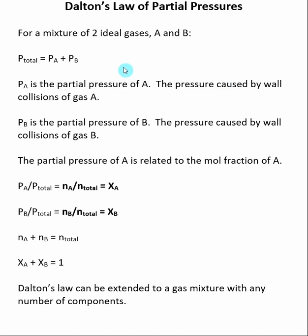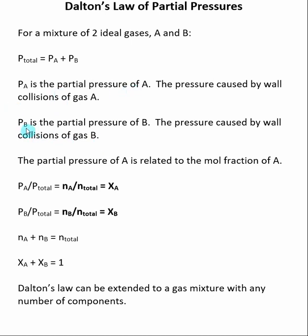Thus far, we've only been looking at examples that have involved one gas. Dalton's Law of Partial Pressures allows us to look at situations that involve more than one gas. Dalton's Law of Partial Pressures says that for a mixture of two ideal gases, A and B, the total pressure of the system is equal to the pressure provided by gas A plus the pressure provided by gas B. P sub A is called the partial pressure of A — that's the pressure caused by the wall collisions of gas A. Likewise, P sub B is called the partial pressure of B, the pressure caused by the wall collisions of gas B. So the partial pressure of A plus the partial pressure of B combine to make the total pressure of the system.